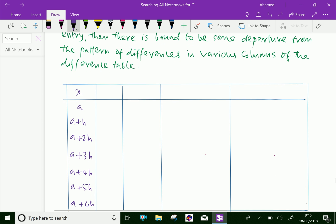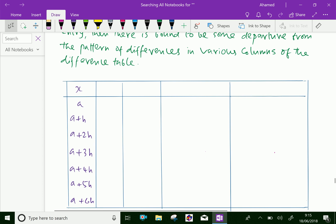Look at this table. The x values are given as a, a plus h, a plus 2h, like it is increasing. Regarding the y values, suppose it is y1, y2, y3. Here for the x value a plus 3h, the y value has something y4 with some error.